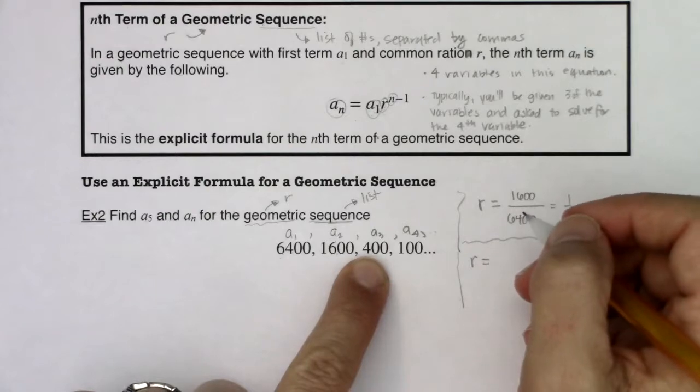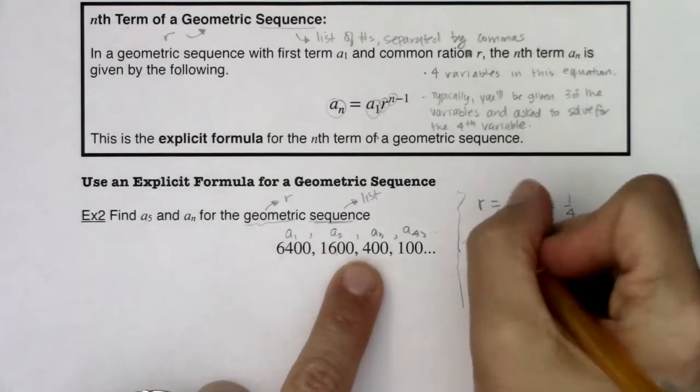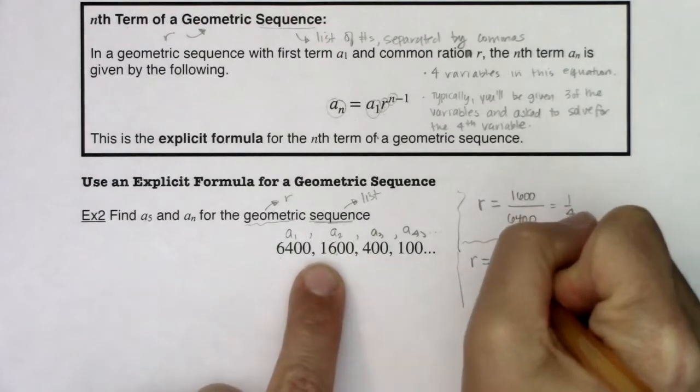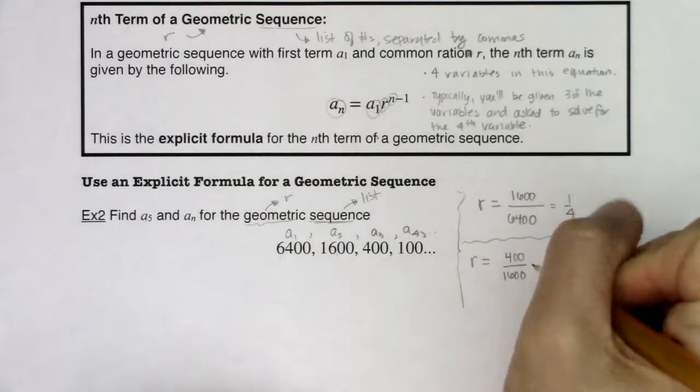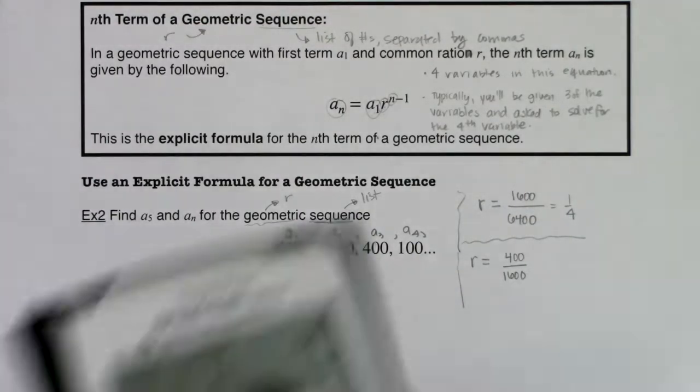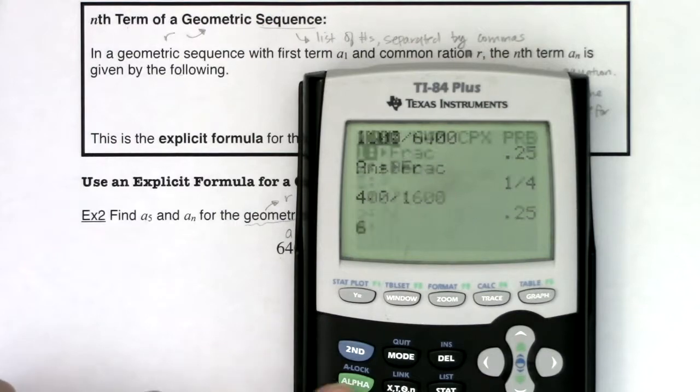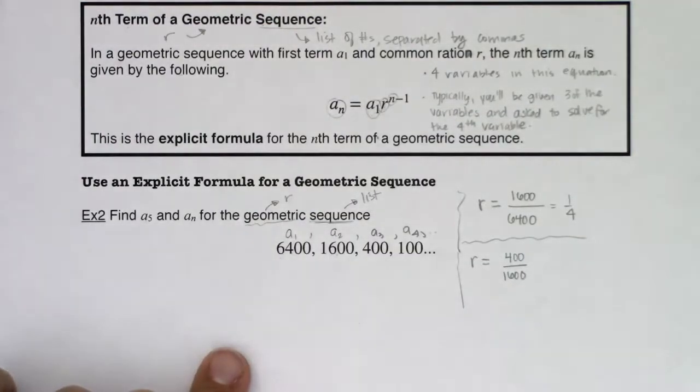Let's do a sub 3 in ratio to a sub 2. My more current term in ratio to the previous term, let's see if this holds with 1 fourth. Now let's do 400 divided by 1,600. That's looking good.